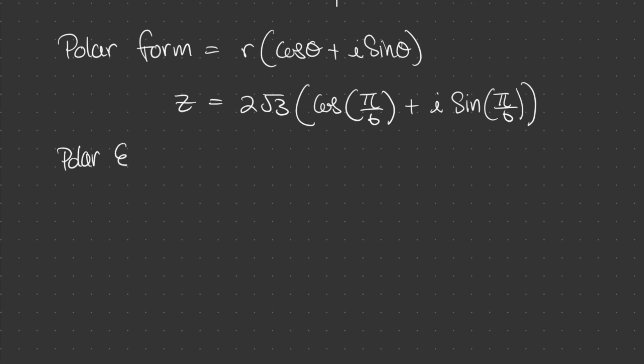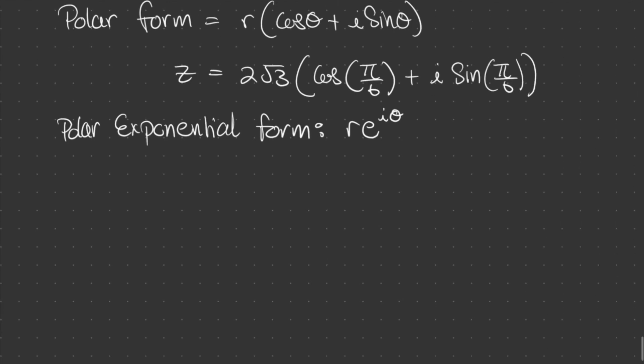Now, the polar exponential form is r e to the power of i theta. Now, this can be written as z is equal to 2 square root 3 e to the power of i pi on 6.